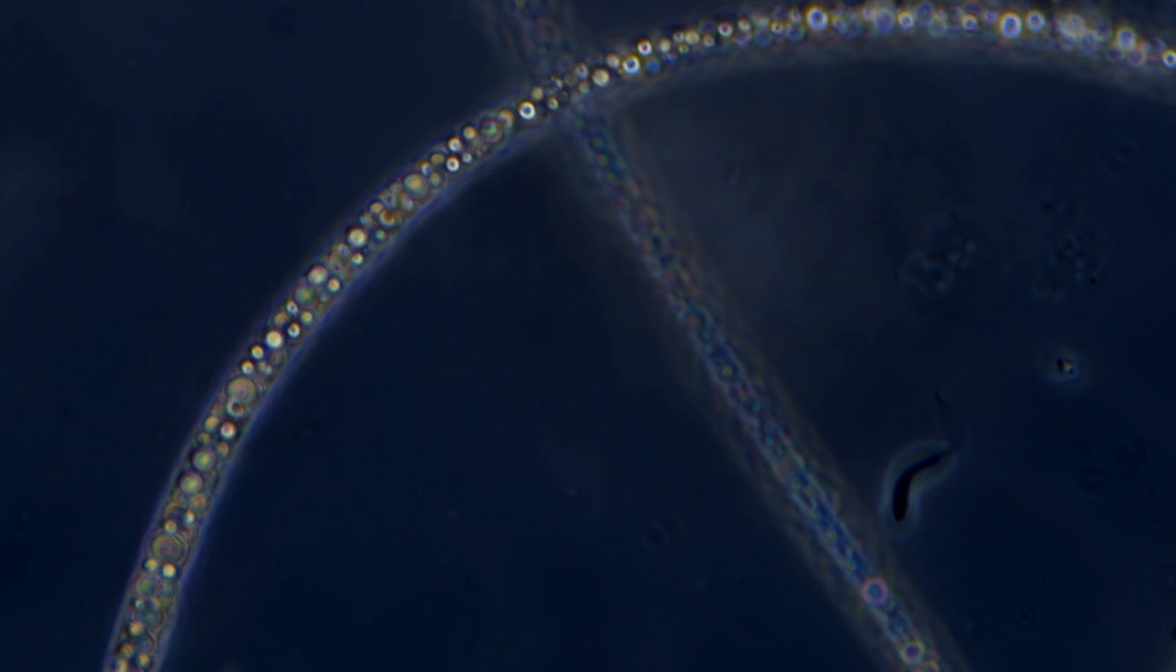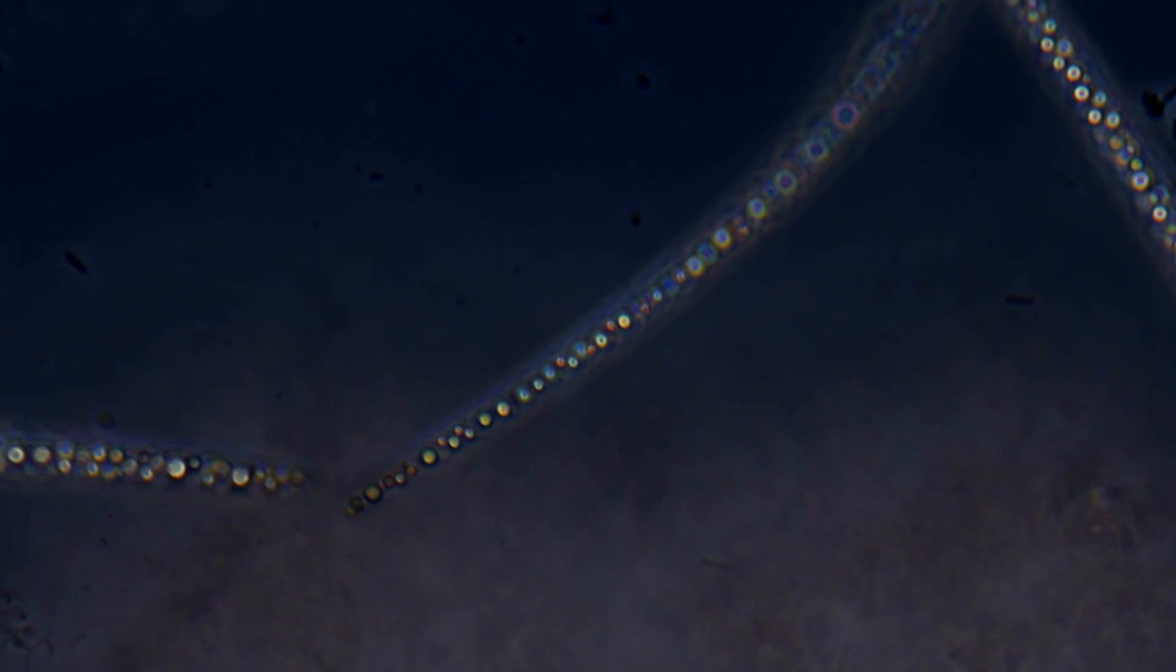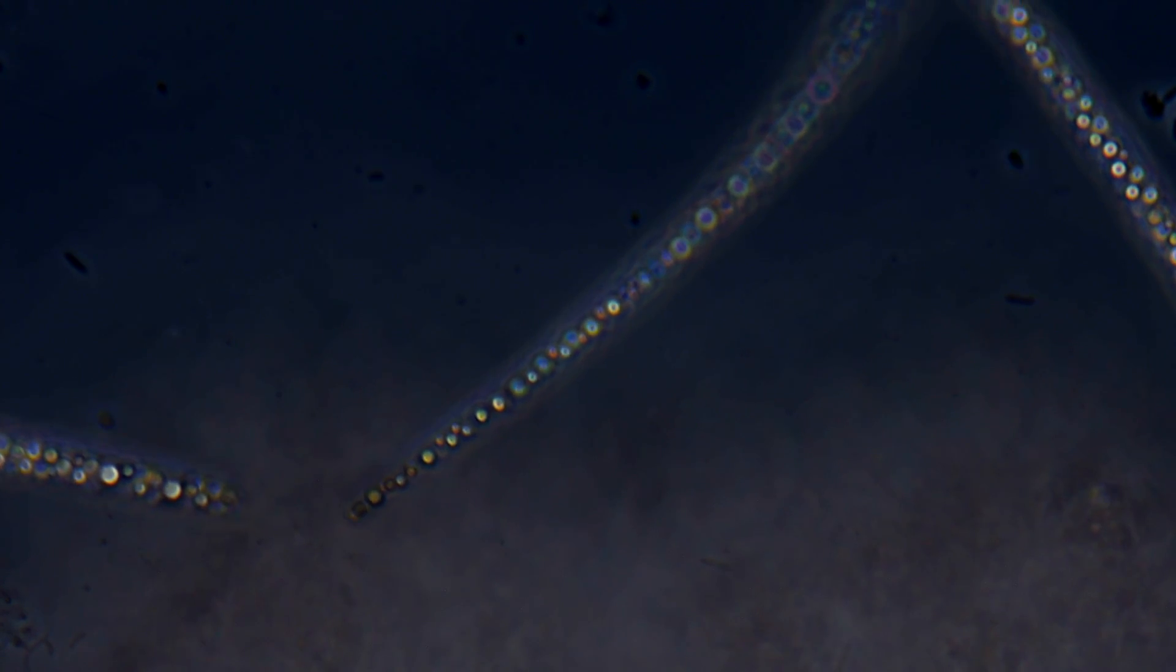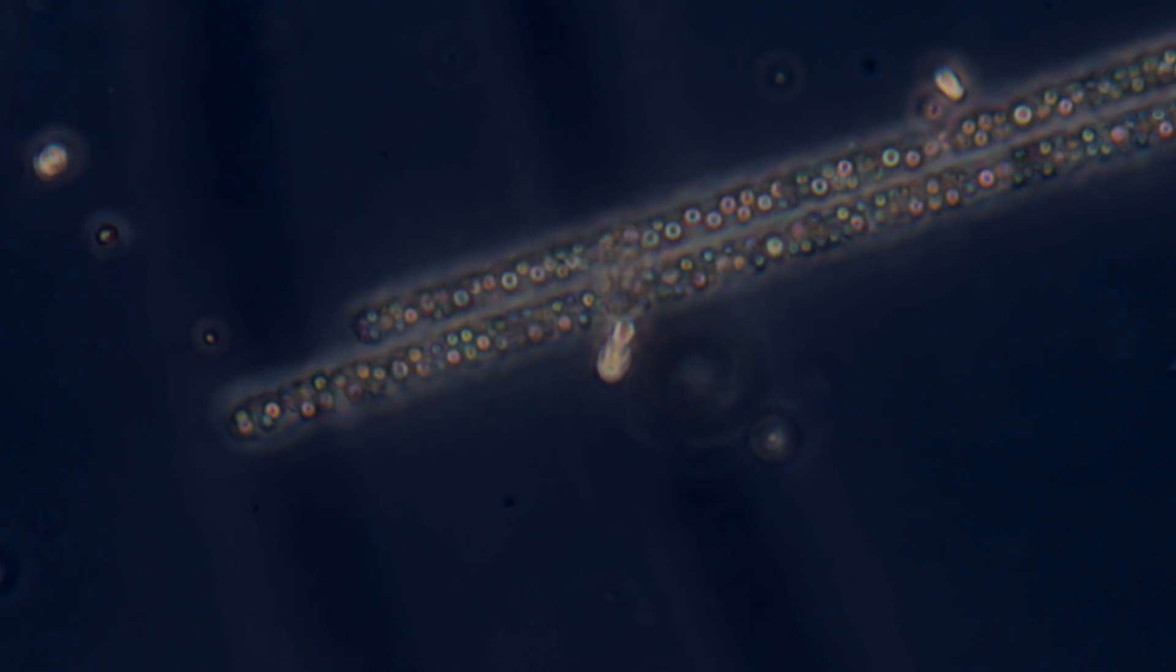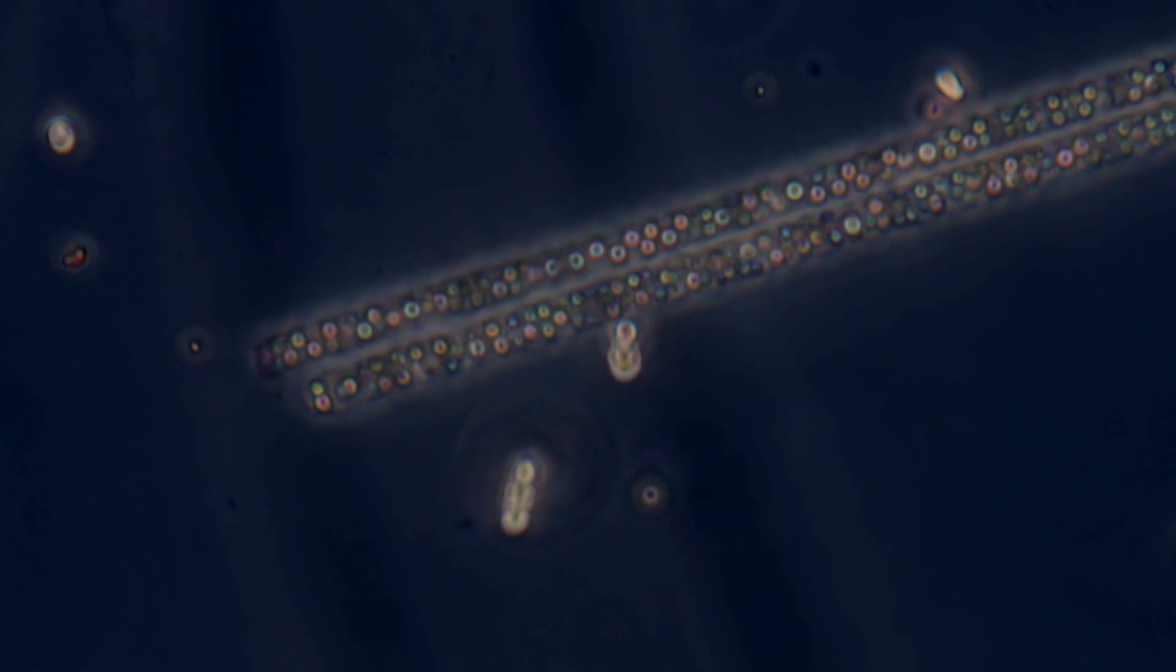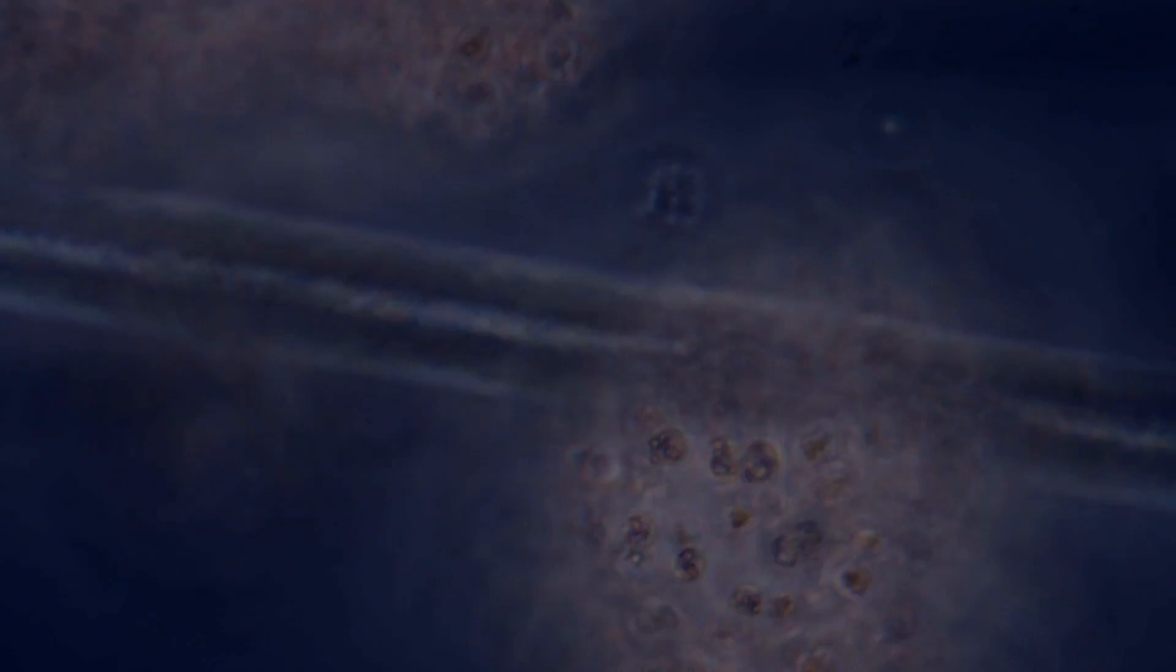Cyanobacteria are arguably the most successful microorganisms on the planet, thriving everywhere. Species live alone or in colonies. Colonial cyanobacteria assume many shapes, from sheets to hollow balls to chains like these.